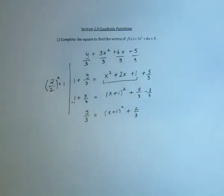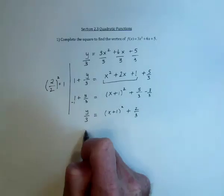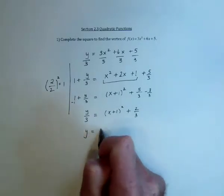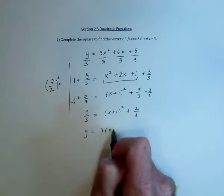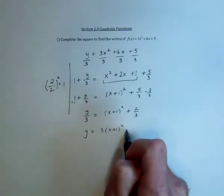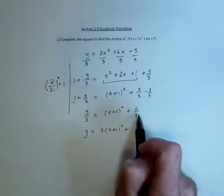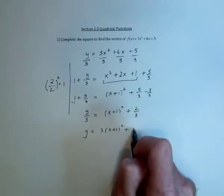And now multiply both sides by 3, or multiply all terms by 3, and we get y equals 3 times x plus 1 squared. When I multiply this one by 3, the 3 in the denominator is going to be canceled, leaving just a 2. So we've done the complete the square.